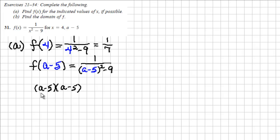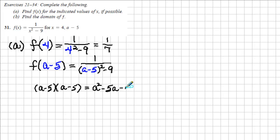To square the binomial we multiply a minus 5 times a minus 5, multiplying every term in the first factor by every term in the second. a times a is a squared. a times minus 5 is minus 5a. Minus 5 times a is minus 5a. And minus 5 times minus 5 is plus 25. So the square of the binomial is a squared minus 10a plus 25.